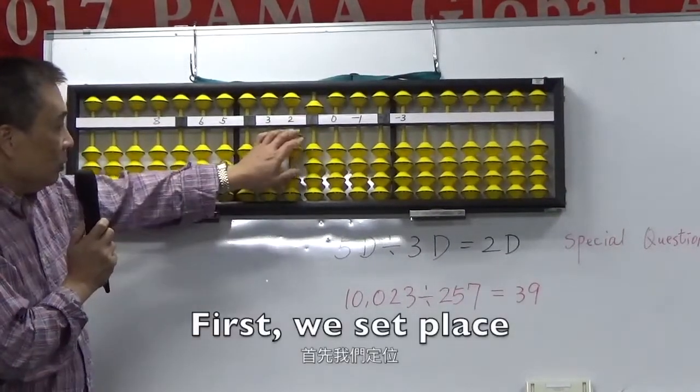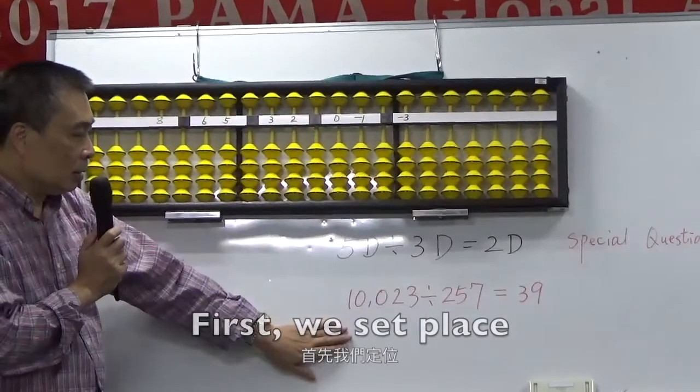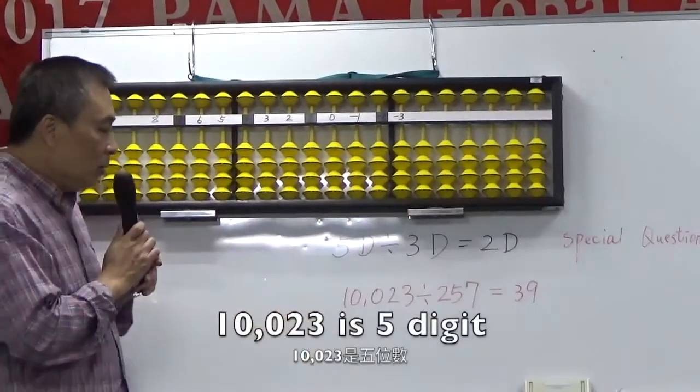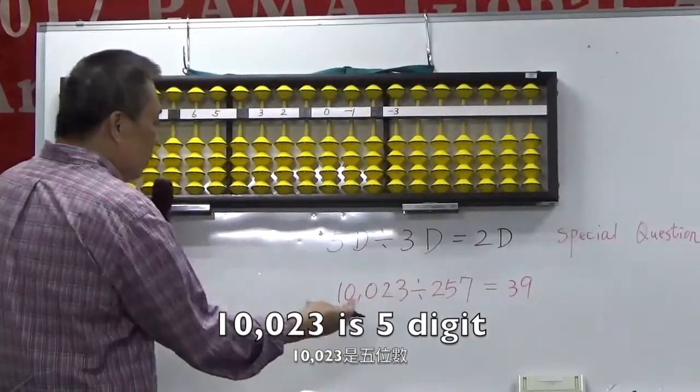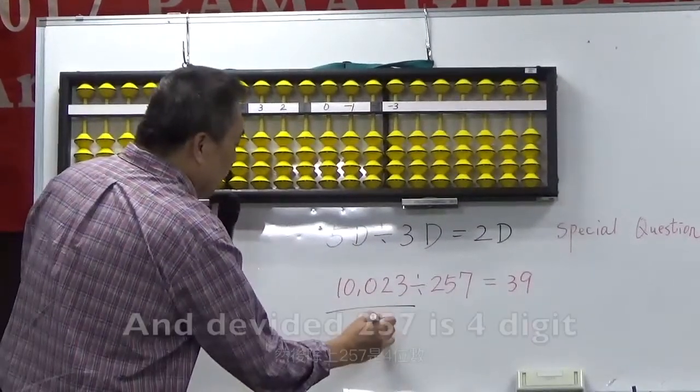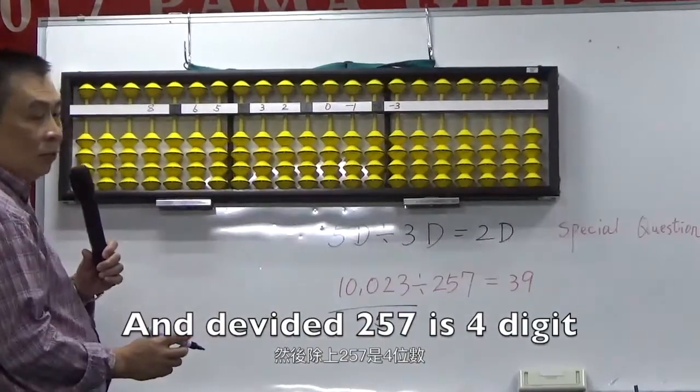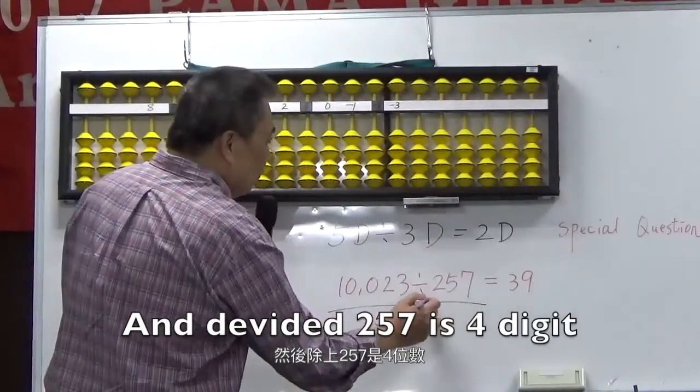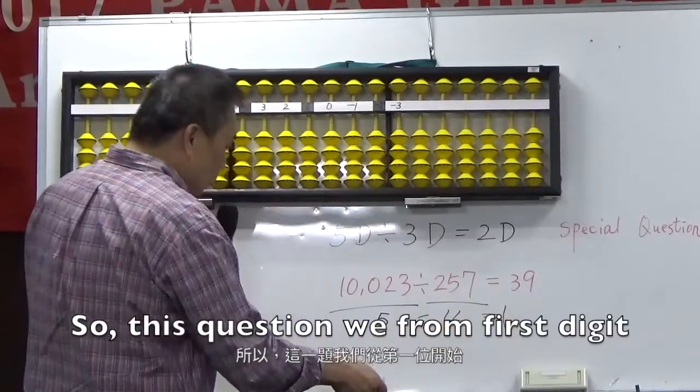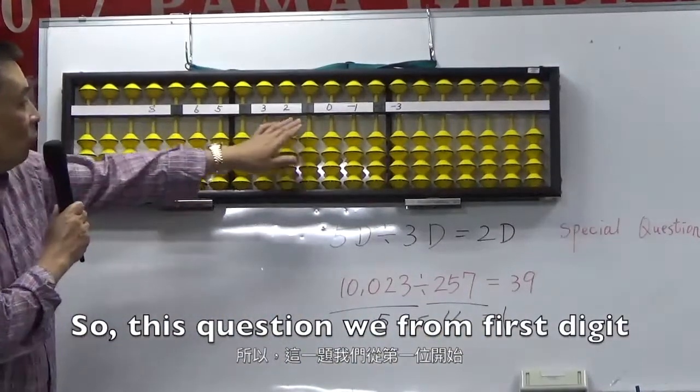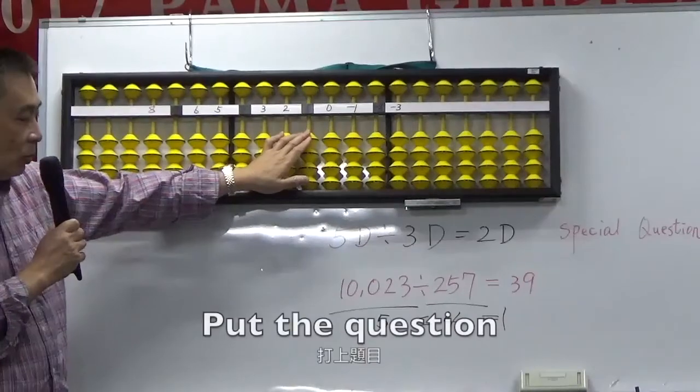First, we set place 1, 0, 0, 2, 3 is 5. And divide 2, 5, 7 is 4. So, this question, we found 1 for the question.